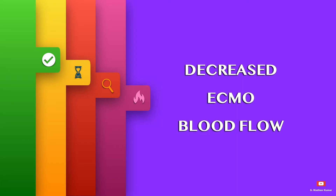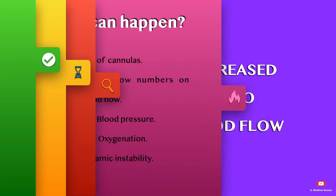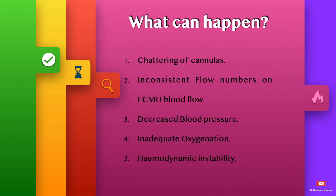Hello everyone. Under the ECMO Troubleshooting Simplified series, today we will see about decreased ECMO blood flow. It can lead to chattering of cannulas, inconsistent flow numbers on the ECMO blood flow console, decreased blood pressure, inadequate oxygenation, and hemodynamic instability.